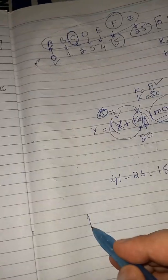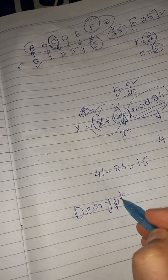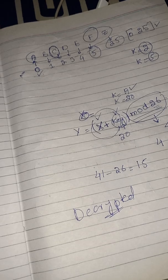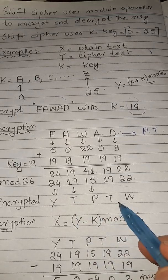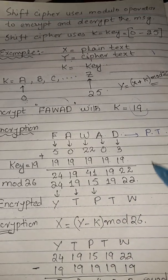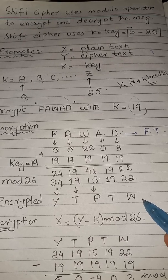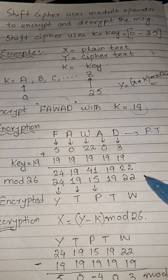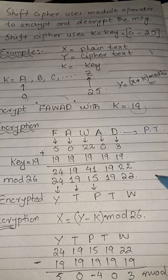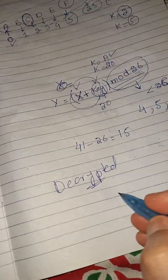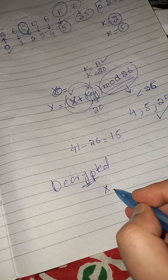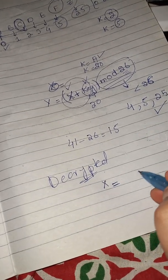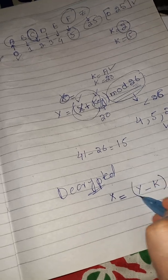Now for decryption — decryption means changing ciphertext back into plain text. We applied key 19 on 'Fawad' to get the encrypted information 'YTPTW'. Now we want to recover 'Fawad' using the same key, because this is symmetric key cryptography. Decryption is the inverse of encryption. The formula is: X equals Y minus K, mod 26.